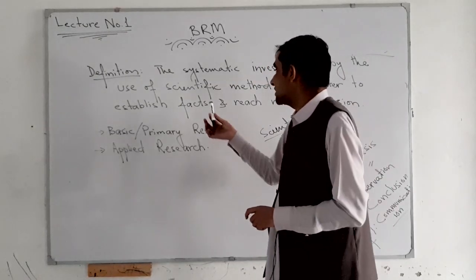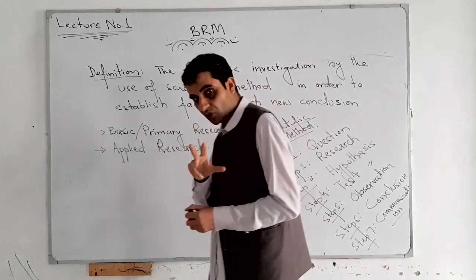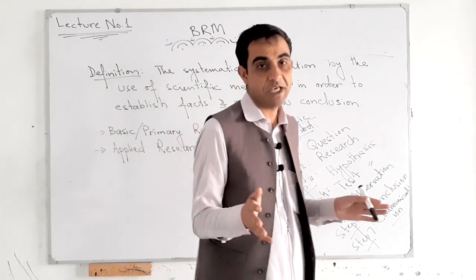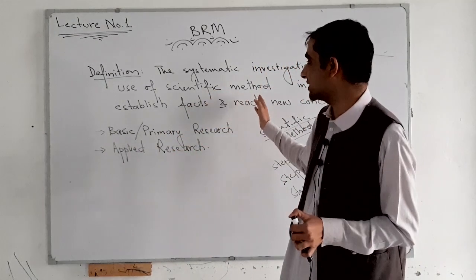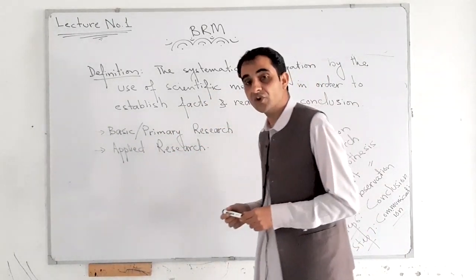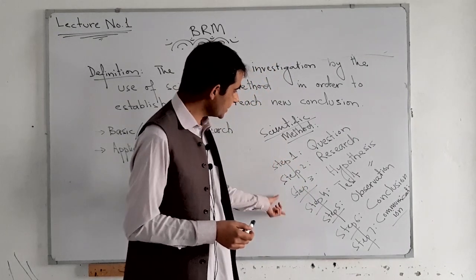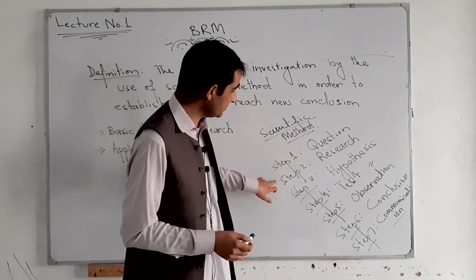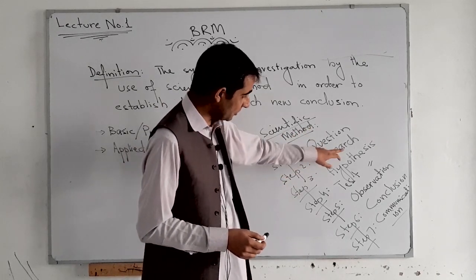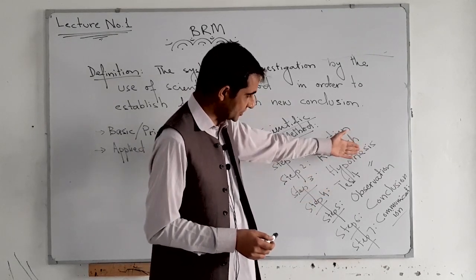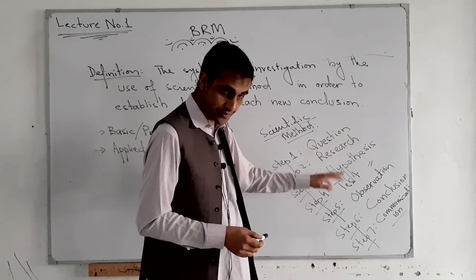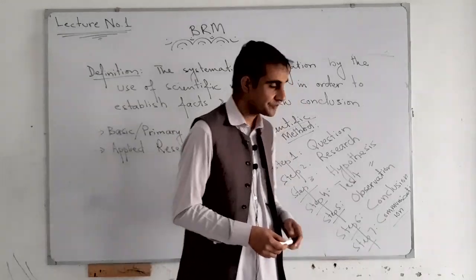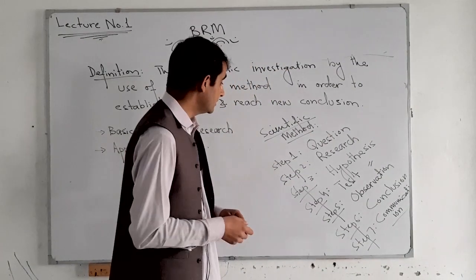Coming to the explanation of the scientific method, which is the backbone of the research process — our research is impossible without the use of the scientific method. There are seven steps in the scientific method: step one, question; step two, research; step three, hypothesis; step four, testing the hypothesis; step five, observation; step six, conclusion; step seven, communication. I am going to explain these steps one by one.